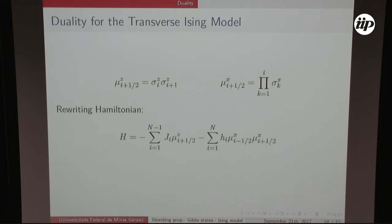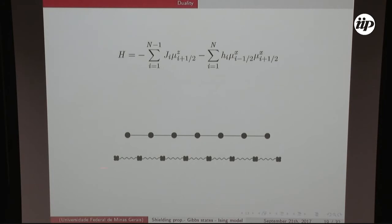One way to better understand this property is using the duality of the transverse Ising model. We redefine operators using the Pauli operators and rewrite the Ising Hamiltonian in a dual form such that J performs the role of a magnetic field in this dual lattice, and h becomes the new interactions. This means that setting the magnetic field to zero at the intersection is equivalent to cutting off the interaction between two sides of the dual chain, making it visually clear why one side has no dependence on the other.